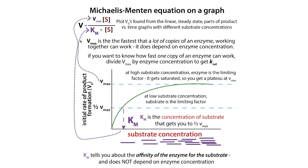We can talk about the velocity at any one point. The substrate concentration does matter for velocity, but when we're talking about the maximum velocity, the substrate concentration doesn't matter because you've saturated the enzyme — you can add more substrate and it's not going to influence anything. But in either case, you're going to have this Km matter. So let's talk more about what this Km actually is.